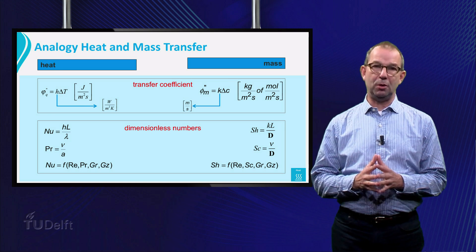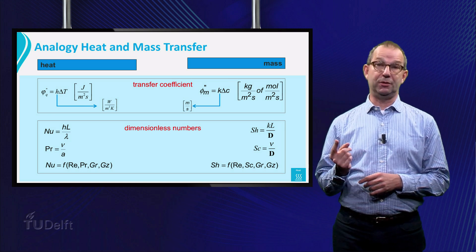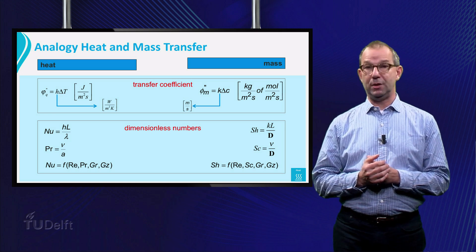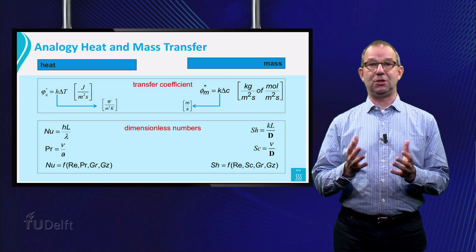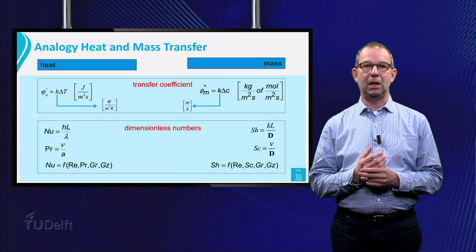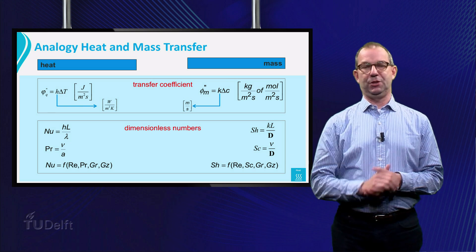For mass transfer, we still have the Reynolds number, but instead of Prandtl, we have Schmidt. In both cases, transfer can be caused by free convection, for which we have to use the Grashof number, gr, which contains the density difference in the system.